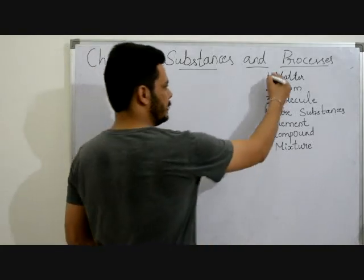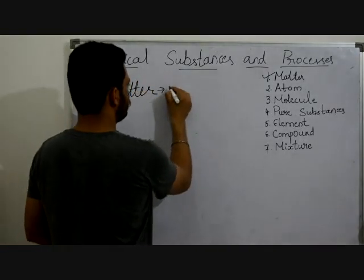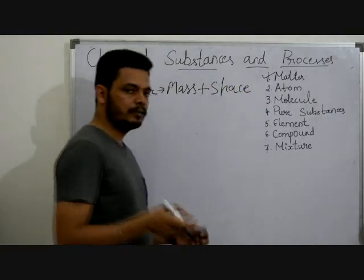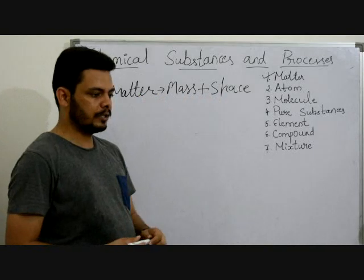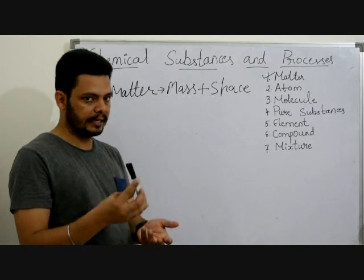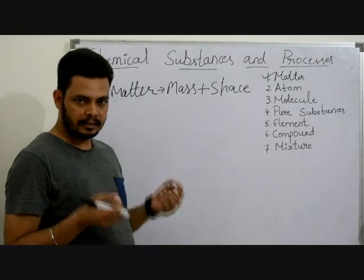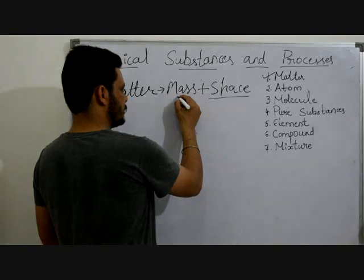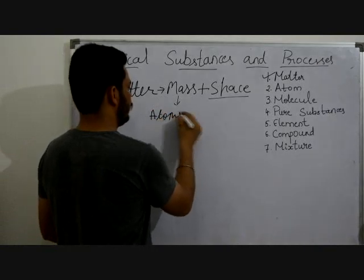Let's start with the first one — matter. What is matter? Anything that has mass and occupies space is known as matter. Take the example of this marker. It has mass — mass means all the atoms, particles and molecules inside it — and it occupies space. So it is known as matter. Mass is made up of particles like atoms and molecules.